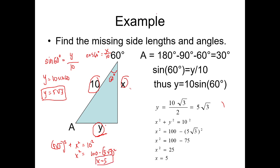Therefore, x is 5 and your y is 5 square root of 3. Those are the missing sides of your right triangle.